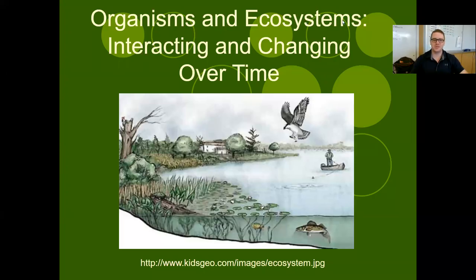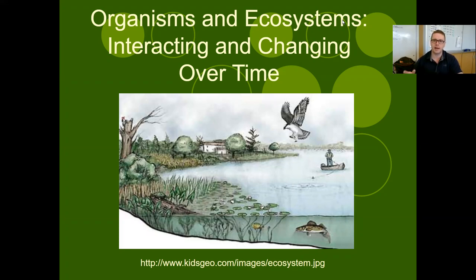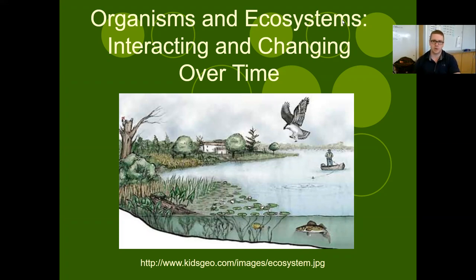Hi everybody. Welcome to the third video for our third section of our Ecology Unit. The first two, we discussed biogeochemical cycles and how we have energy flowing through our ecosystems and food webs and food chains. In this one, we're going to be looking at how organisms can specifically interact with each other and how the ecosystem can change over time and how all this is interconnected and can affect all the different components throughout an ecosystem.